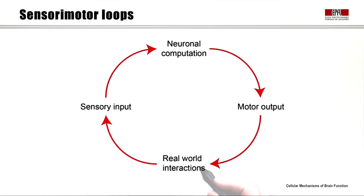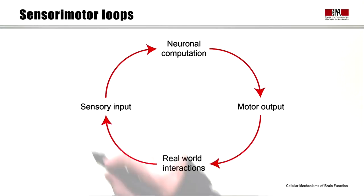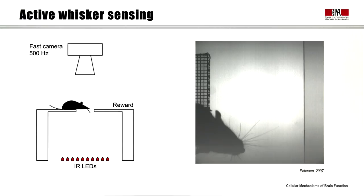That motor output interacts with the real world. We might move our hands against an object or move our eyes, and then the visual field will change and give rise to different sensory input that in turn influences neuronal computation. In that way, sensory-motor loops are the most important determinants of behavior. In this video, we'll consider the mouse whisker system, which is one of the key systems being analyzed for active sensing.